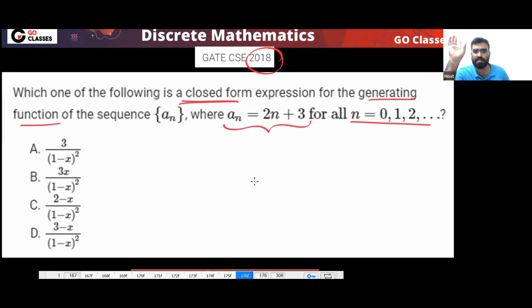I want to eliminate some options. Tell me which option you can eliminate and how will you eliminate. Because you already know that G(0) will be what? G(0) should be equal to A(0), right? So what is A(0) here? A(0) is three.